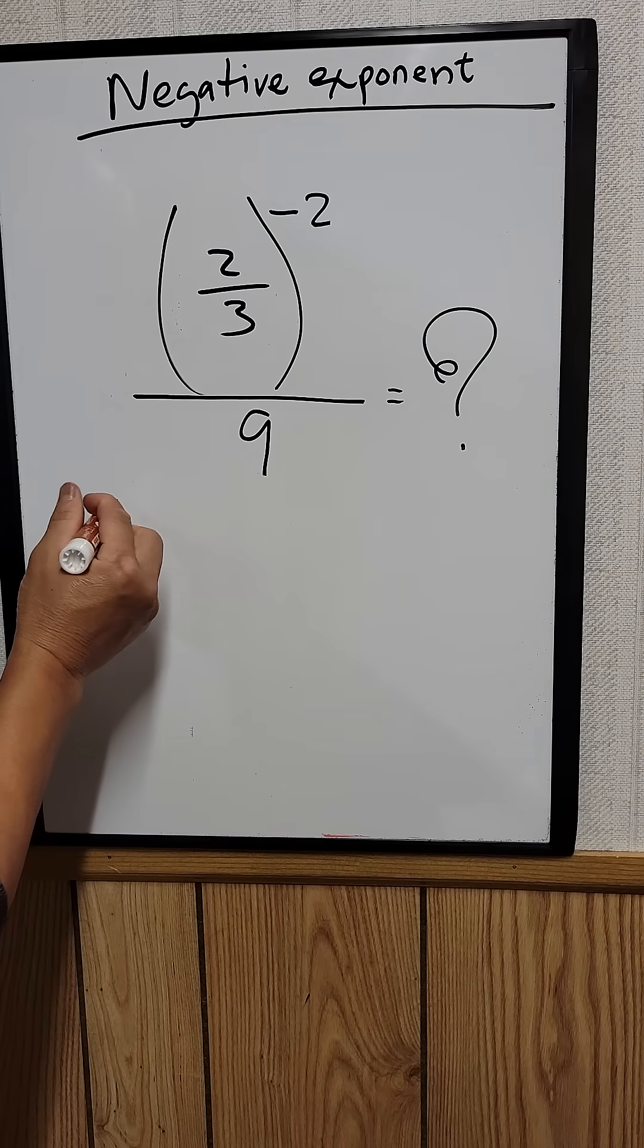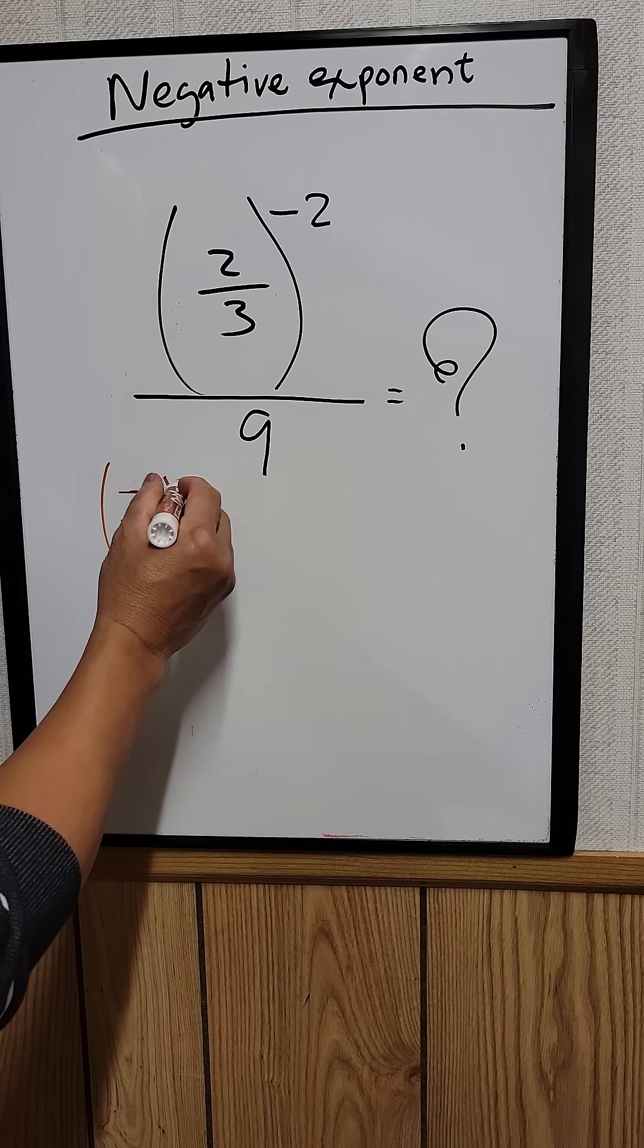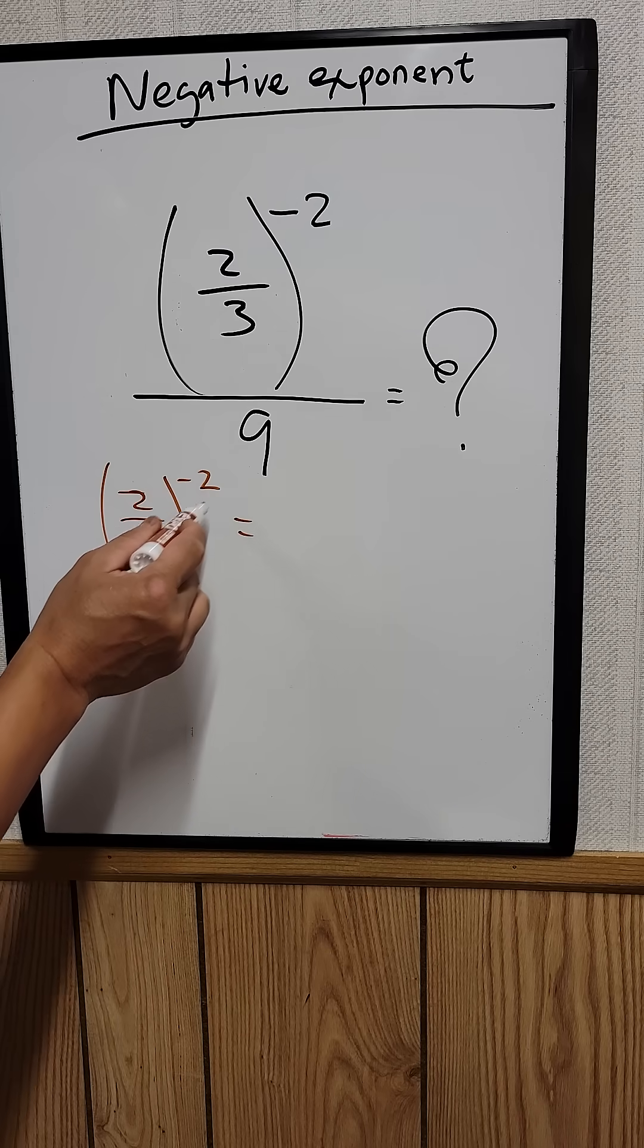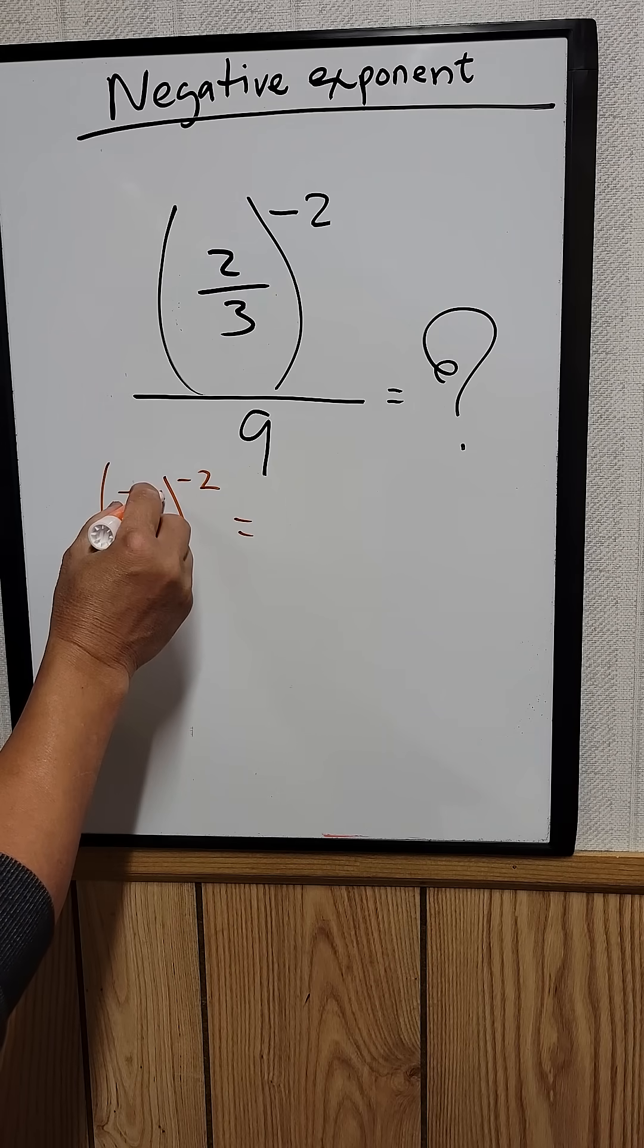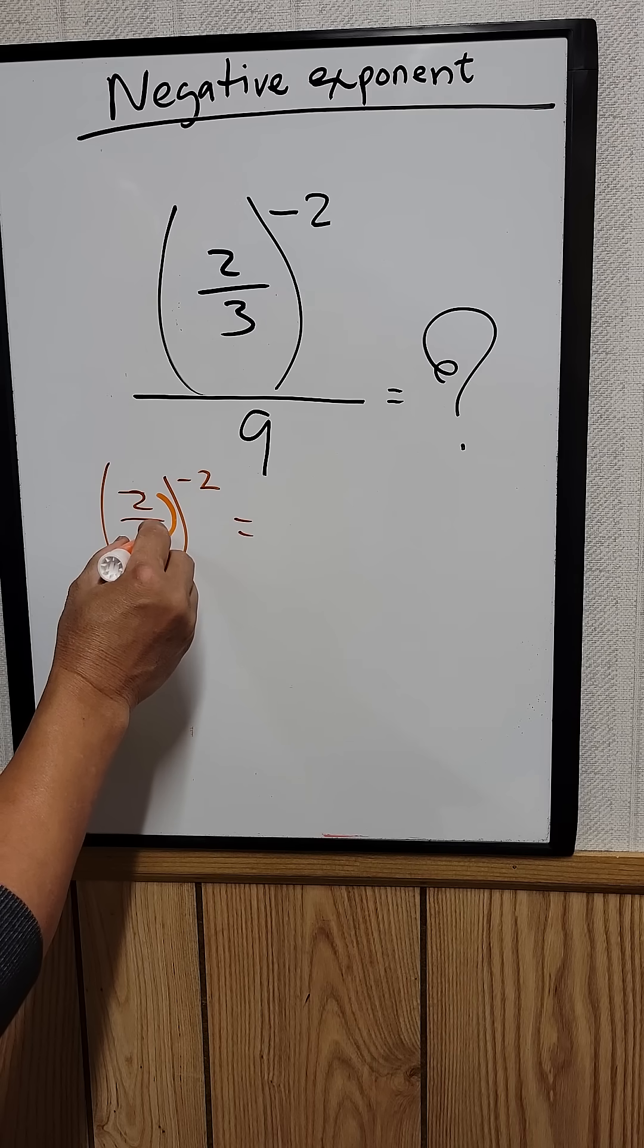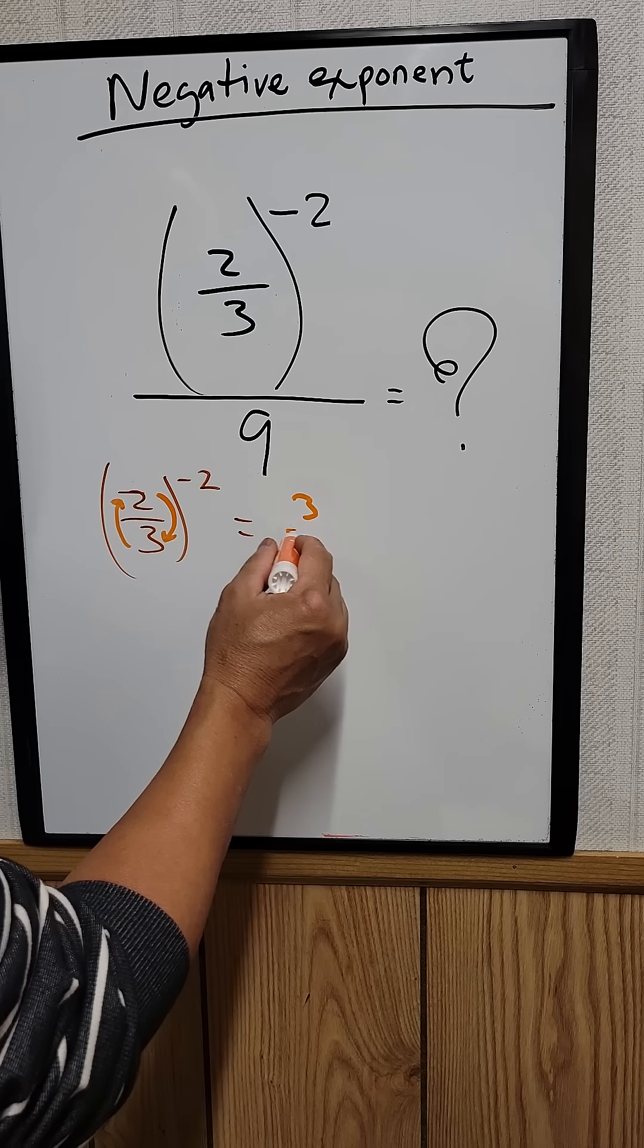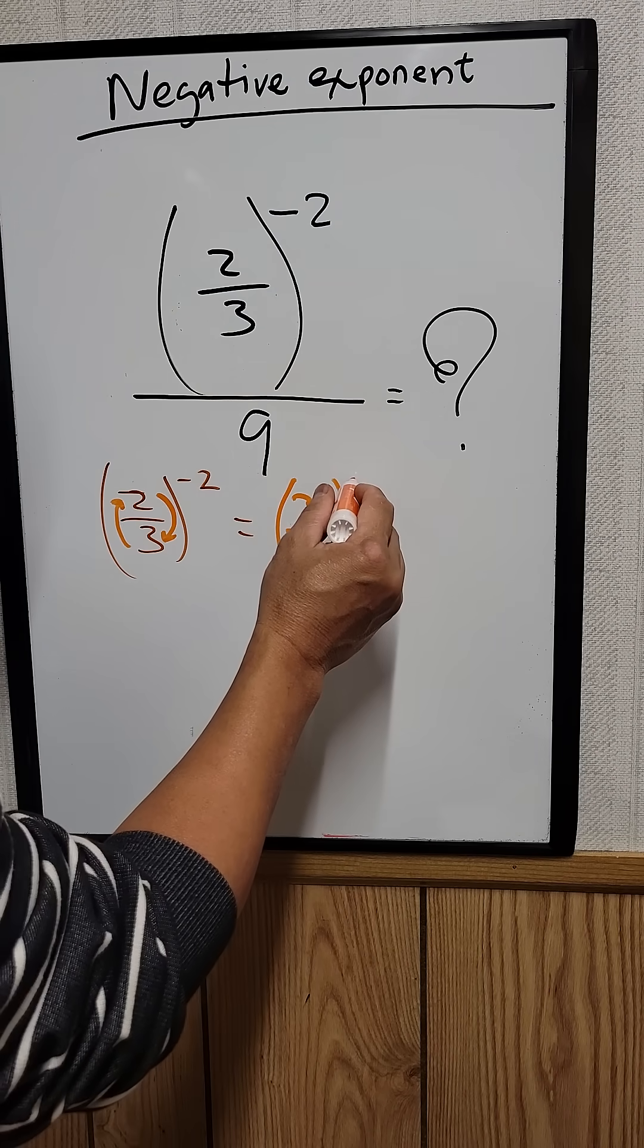So 2/3 raised to the negative 2. Now we want to get rid of the negative exponent. What we do is we use reciprocal. So the 2 becomes the denominator and the 3 becomes the numerator. So we rewrite that as 3 over 2, and now we get rid of that negative exponent so it just becomes 2.